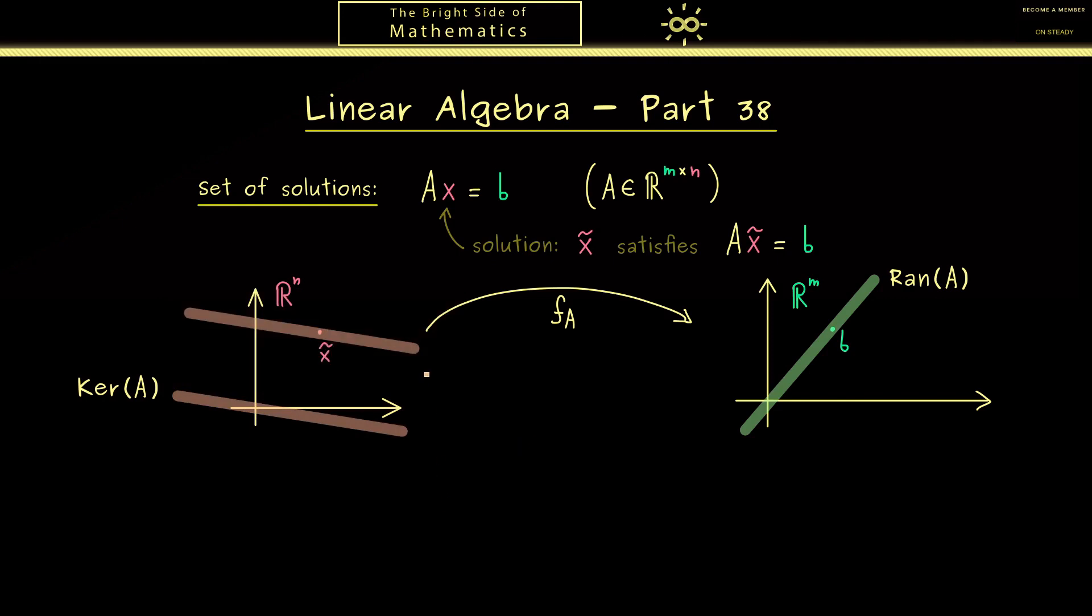Actually, in this video we will prove that the set of solutions looks exactly like this—it's a so-called affine subspace. However, at this point you can already remember two important facts for the solutions. On the one hand, it's needed for the existence that b is an element in the range of A, because otherwise we cannot hit b at all.